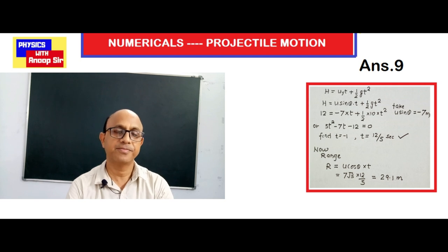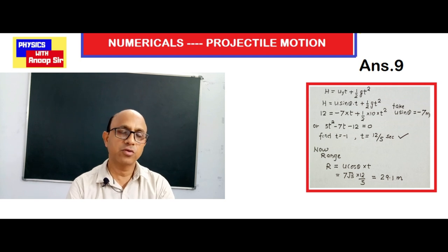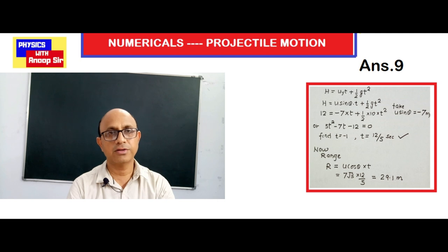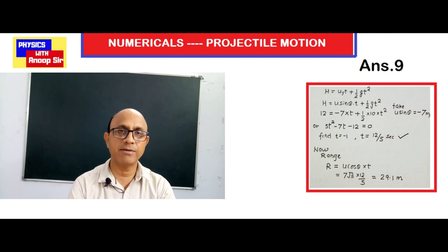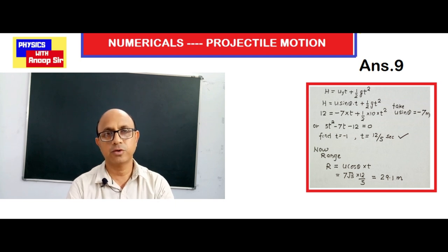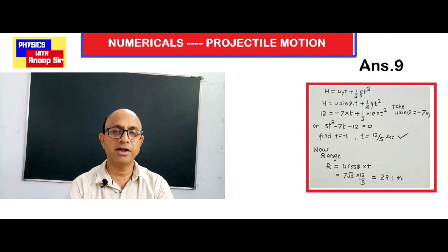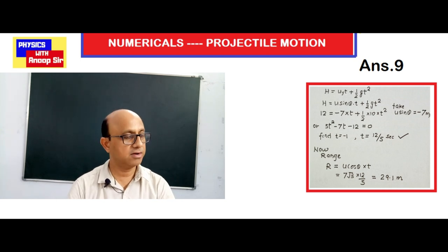To calculate range, we use: R = u cosθ × t = 7√3 × (12/5). Solving this gives range = 29.1 meters.